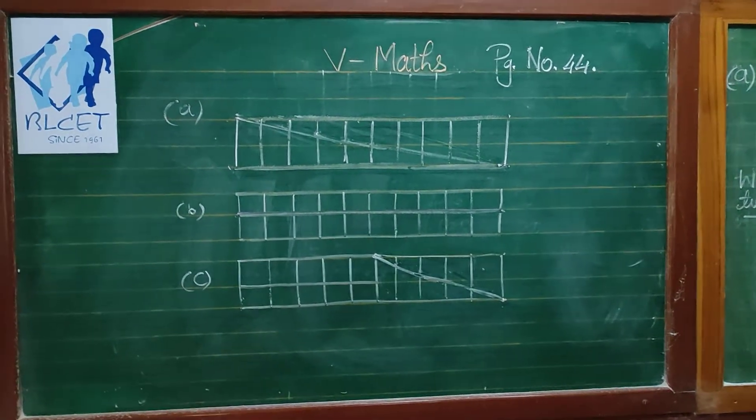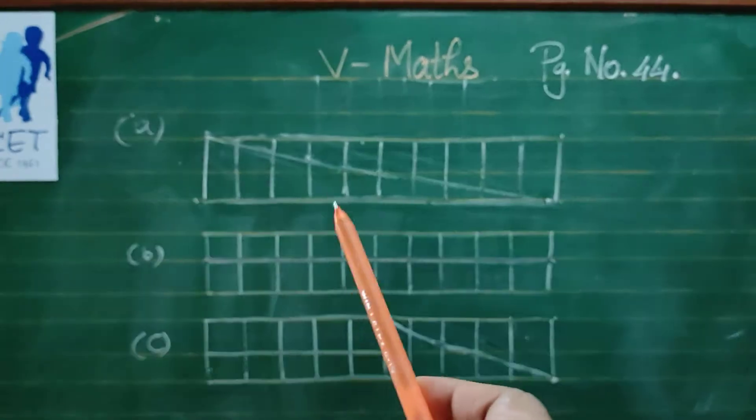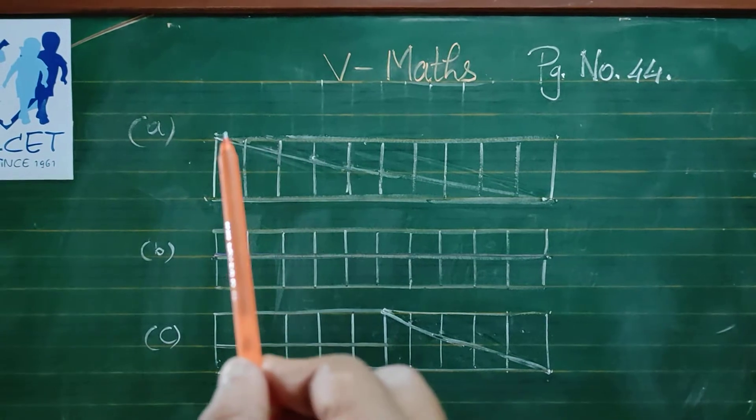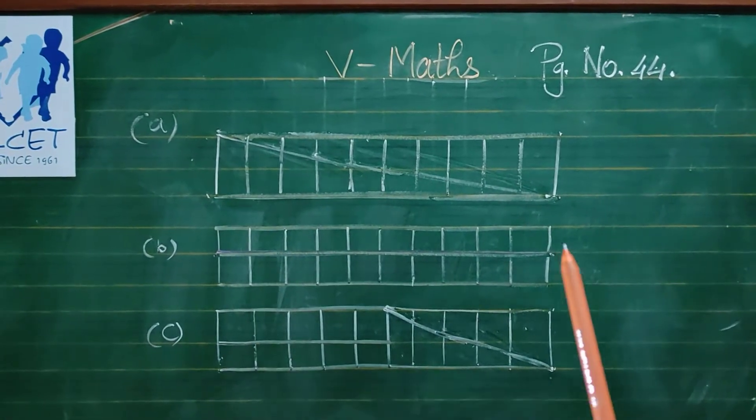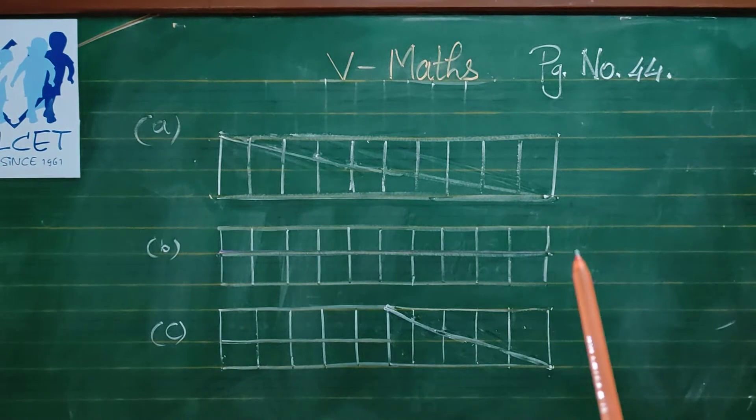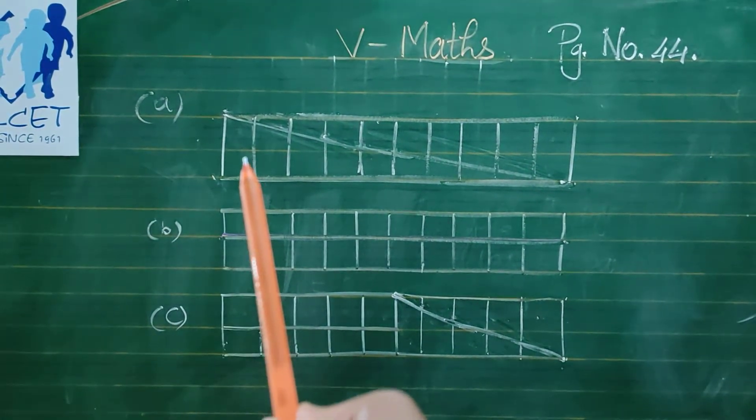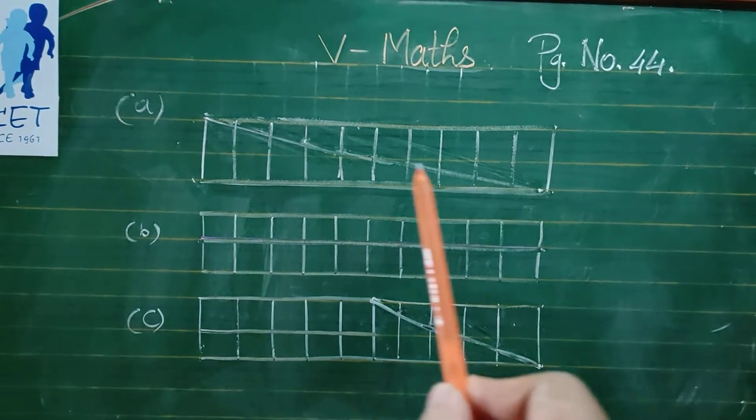You can see here the figure. So in your graph notebook you will draw the figure in this way. Rectangle is given. Middle line yellowish color, light yellow you can see here.